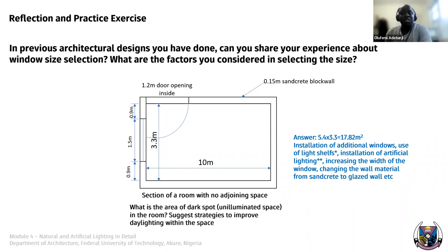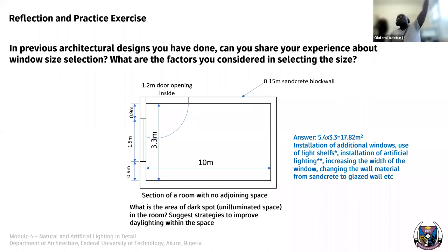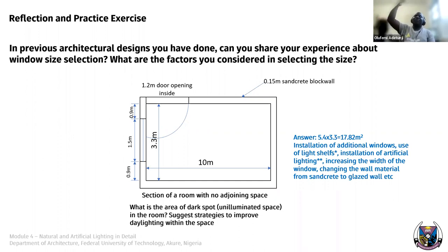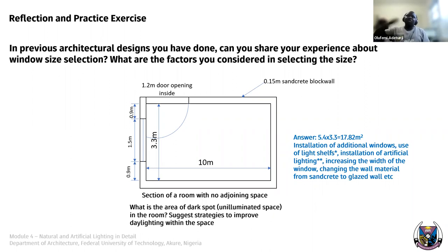This is a plan I've drawn out. Once you know the height of the window head — let's say the head is at 2.4 metres — that means the effective illumination will stop at 4.8 metres from the window. Any spaces beyond that 4.8 metres will be classified as dark spots.